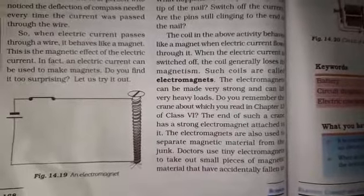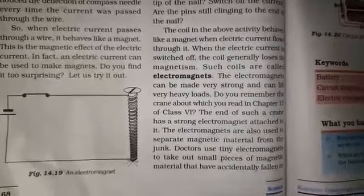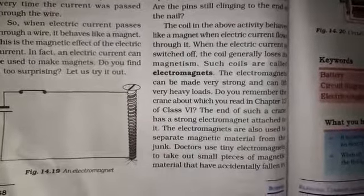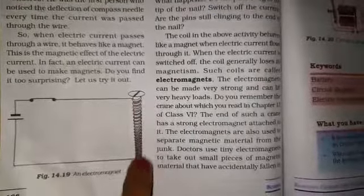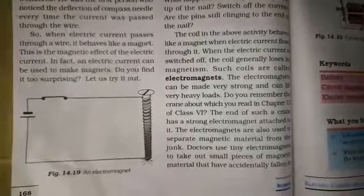Such coils are called electromagnets - this coil is called an electromagnet because it has an electric current flowing through it and it behaves like a magnet.